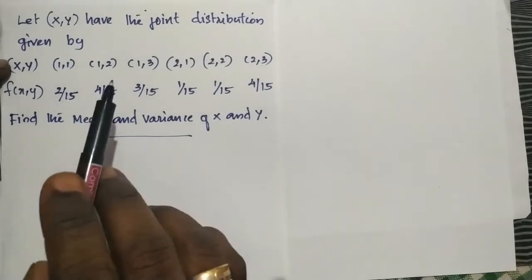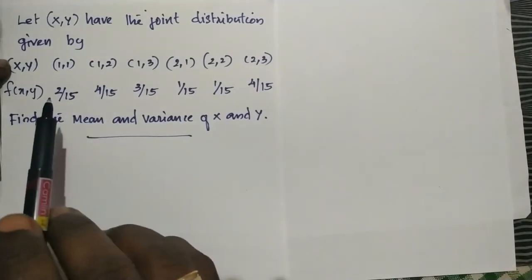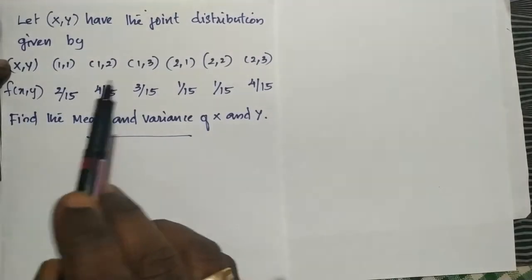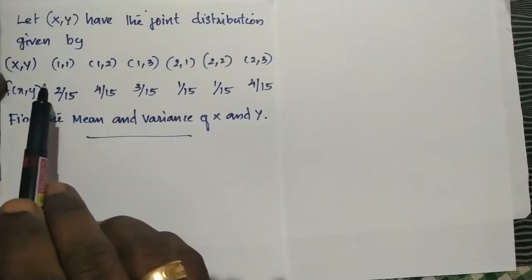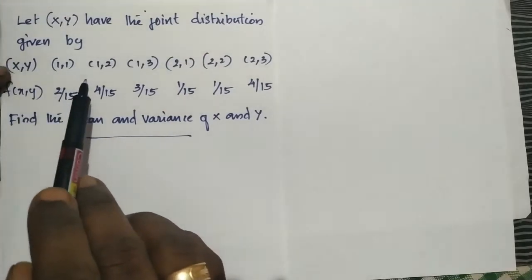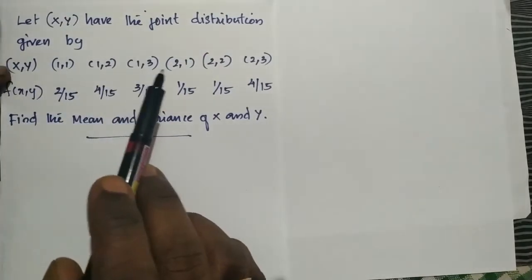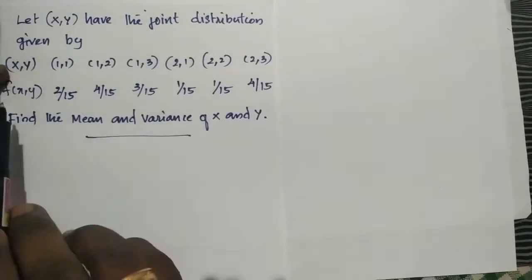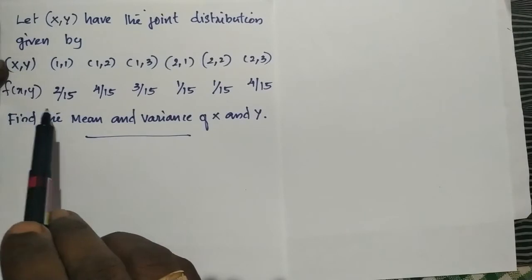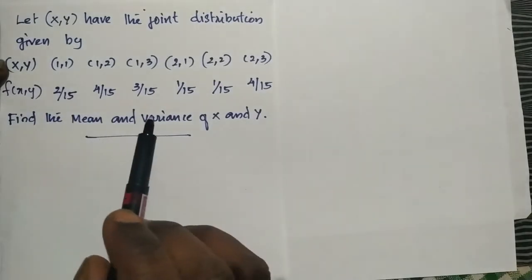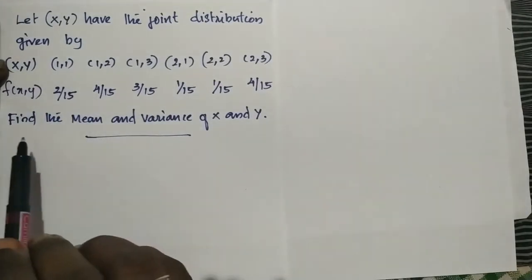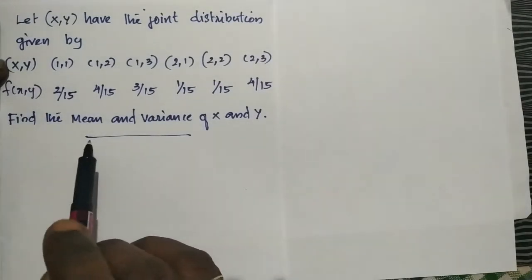For example, XY is the joint distribution given by XY pairs: (1,1), (1,2), (1,3), (2,1), (2,2), (2,3), and the probabilities are 2 by 5 and 4 by 5. These are the values. This is the mean and variance.